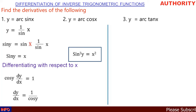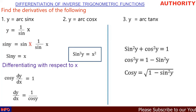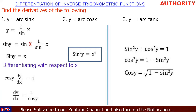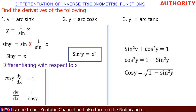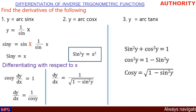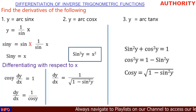Recall the identity: sin²(y) + cos²(y) = 1. Making cos²(y) the subject: cos²(y) = 1 − sin²(y). Taking the square root: cos(y) = √(1 − sin²(y)). Substituting into our expression: dy/dx equals one over √(1 − sin²(y)).